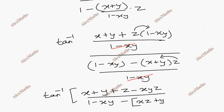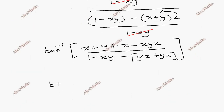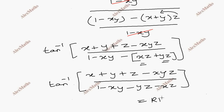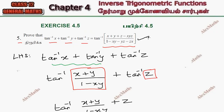So tan inverse of (X plus Y plus Z minus XYZ), divided by (1 minus XY minus YZ minus XZ). This is the final simplified expression, completing the proof.